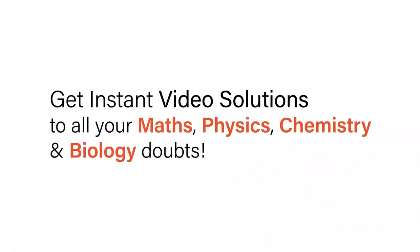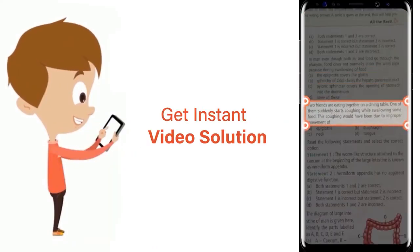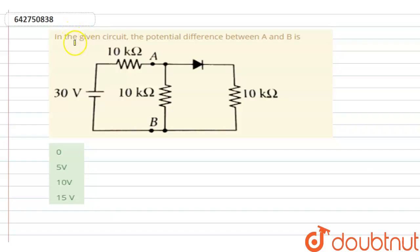With Doubtnet, get instant video solutions to all your maths, physics, chemistry and biology doubts. Just click the image of the question, crop the question, and get instant video solution. Download Doubtnet app today. Hello everyone, our question is in the given circuit, find the potential difference between A and B.